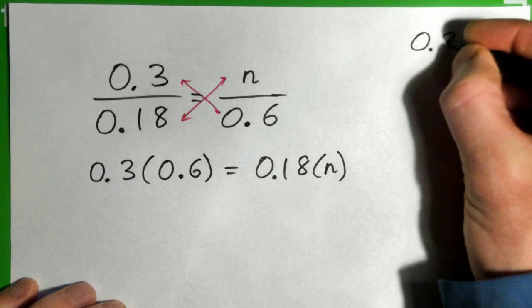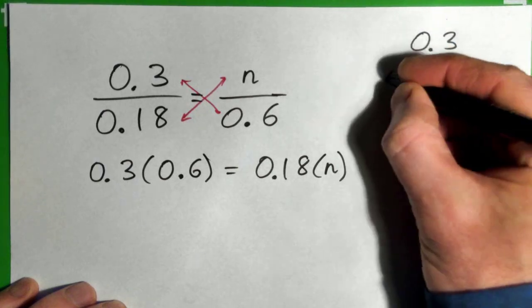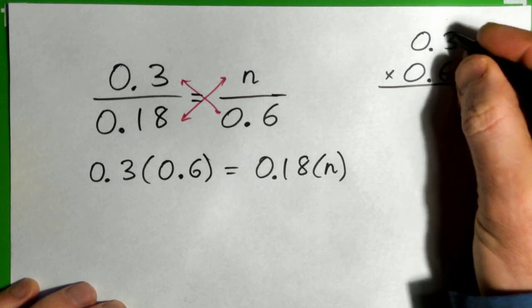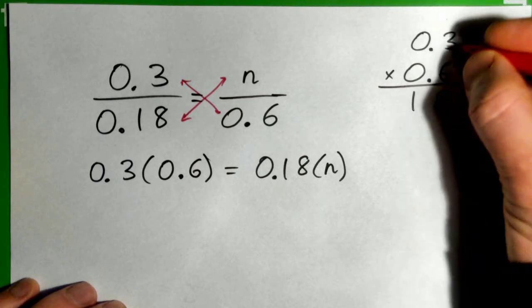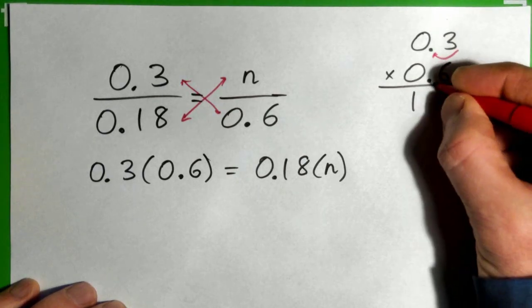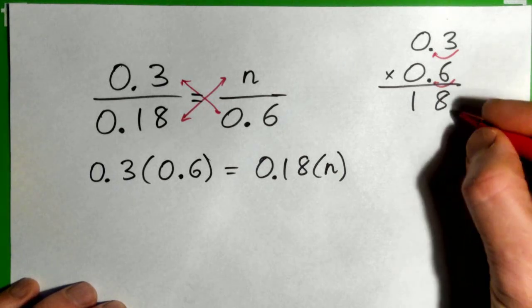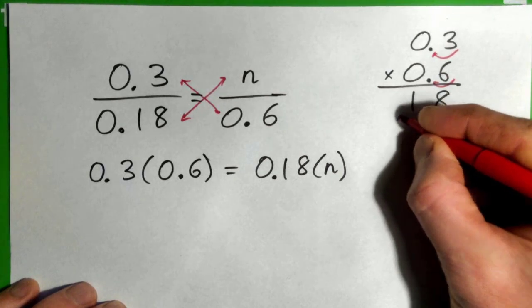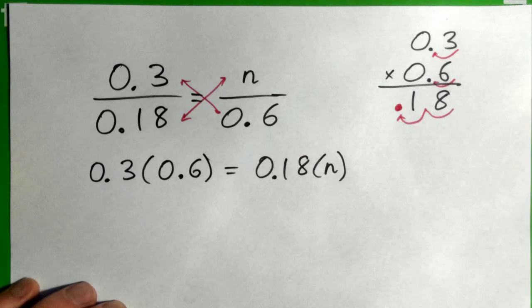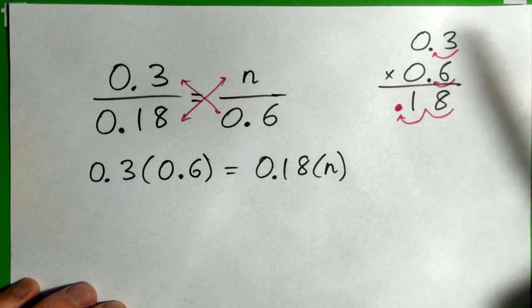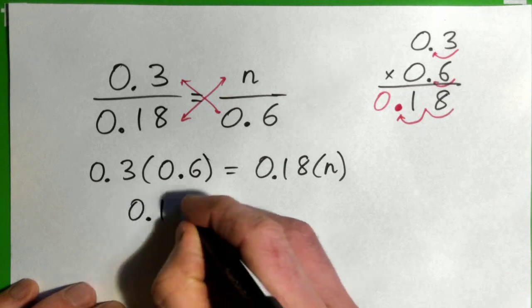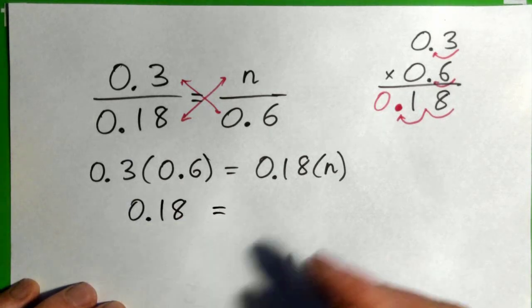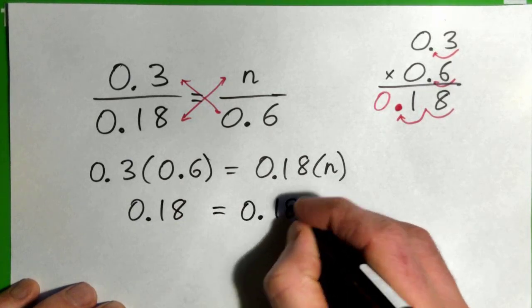So 0.3 times 0.6. 6 times 3 is 18. And there are 1, 2 decimal points in the question. So that means there's 1, 2 decimal points in the answer. So 0.18 is what this becomes. 0.18 here equals 0.18n.